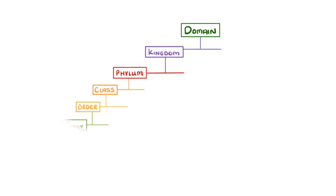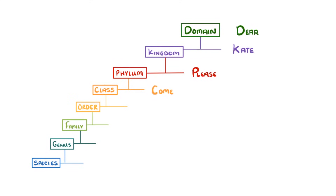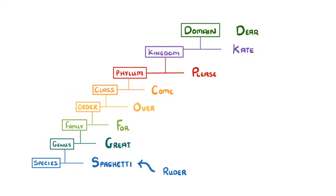When it comes to remembering the order of all these groups, the best strategy is to find a good mnemonic, which is just a phrase you use to help you remember terms in a list. For example, if you remember 'Dear Kate, please come over for Great Spaghetti,' then you'll be able to work out the order of domain, kingdom, phylum, and so on, because the first letters of each word are the same. Feel free to change around a couple of the words to make it easier to remember — often the ruder ones are the best.